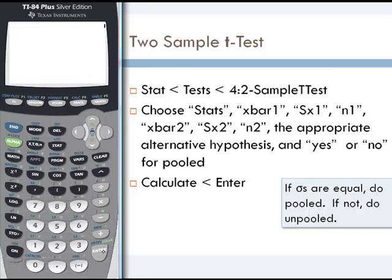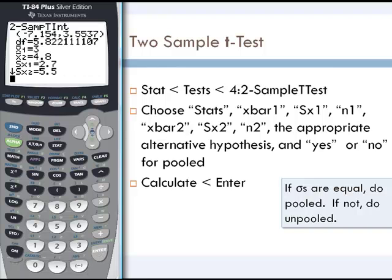Then we calculate. Here we have that the difference between our first population mean and our second population mean should be between negative 7.154 and 3.554.